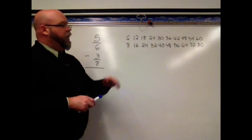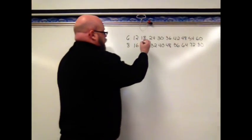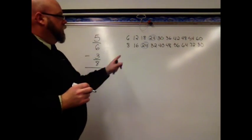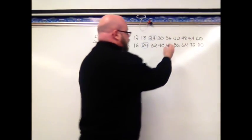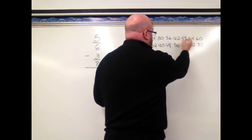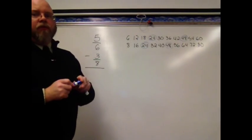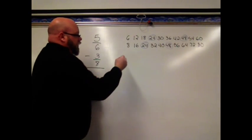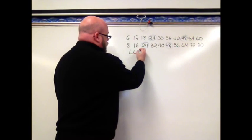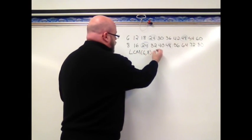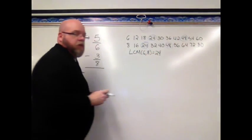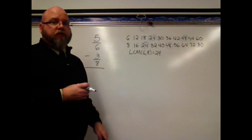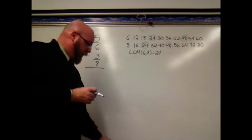Looking for what 6 and 8 have in common. I see 24. I see 24 is in common. Keep looking. I also see 48 is in common. But I'm looking for the least common multiple. That means the smallest number they have in common. So the least common multiple of 6 and 8 is 24. So I can use 24 as the new common denominator for 5 sixths and 3 eighths when I rename those fractions so that I can subtract them.